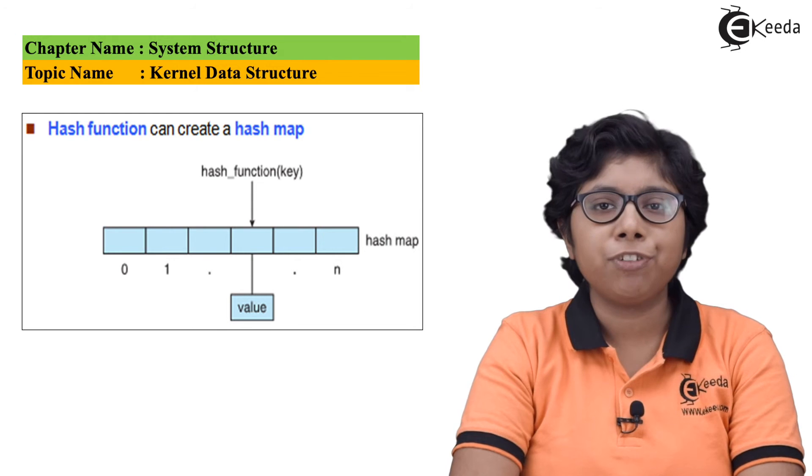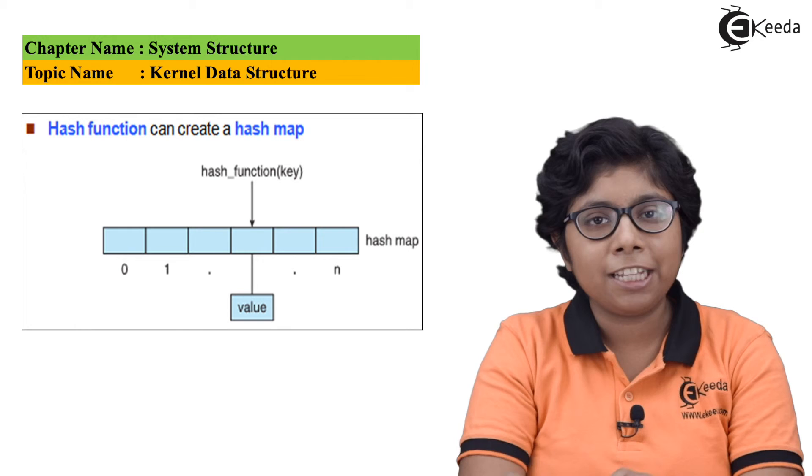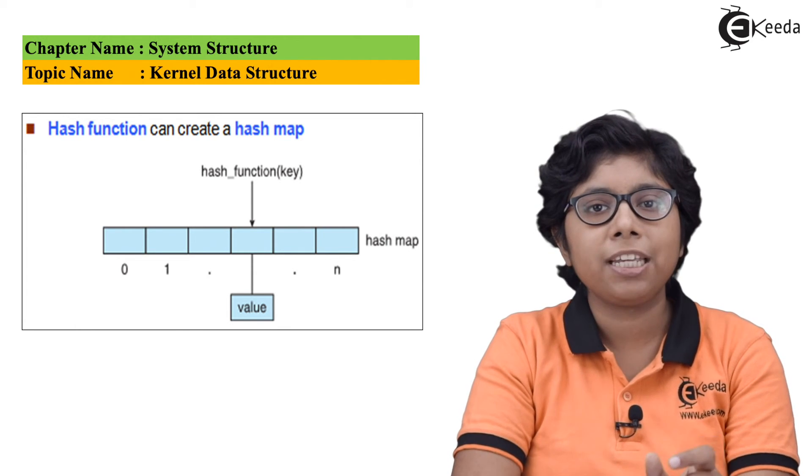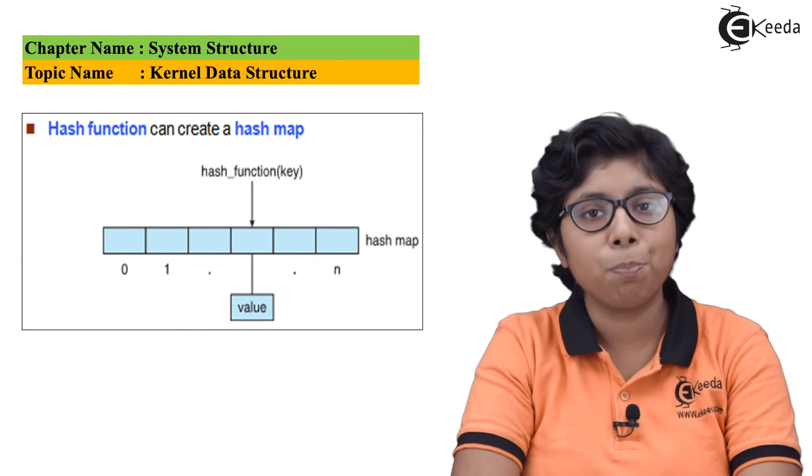One use of a hash function is using hash mapping. The key and pair, the key and element in this pair is used to map the values. Suppose the key operating is mapped to the value system. This way a hash map can be performed.